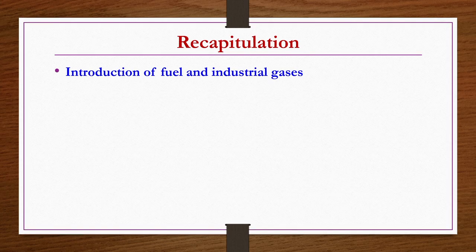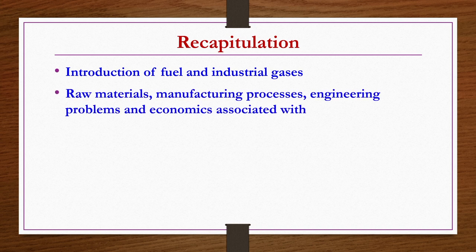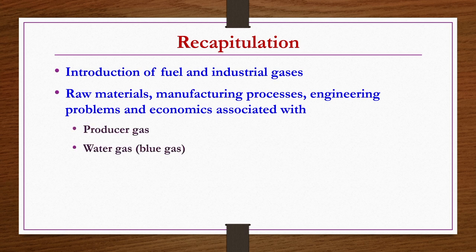In the previous lecture, we have seen the introduction of fuel and industrial gases. We also covered details of raw materials, manufacturing processes, engineering problems and economics associated with the production of three different types of gases: producer gas, water gas — also known as blue gas because of its flame color when burnt — and coke oven gas.